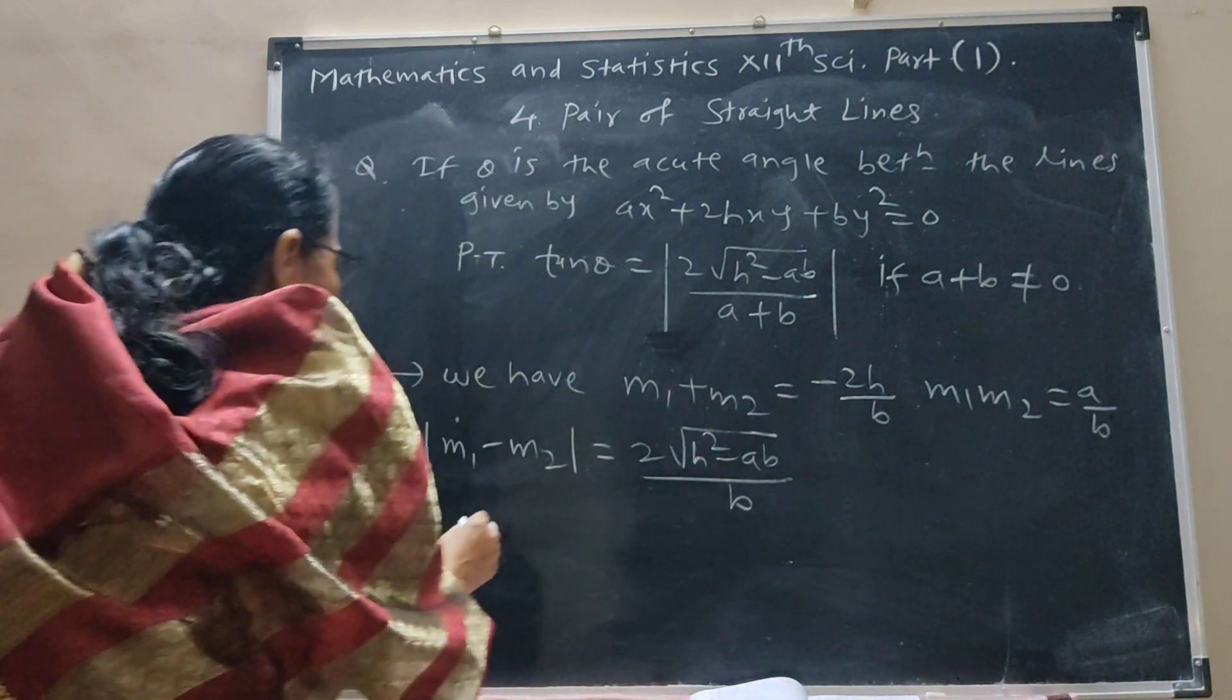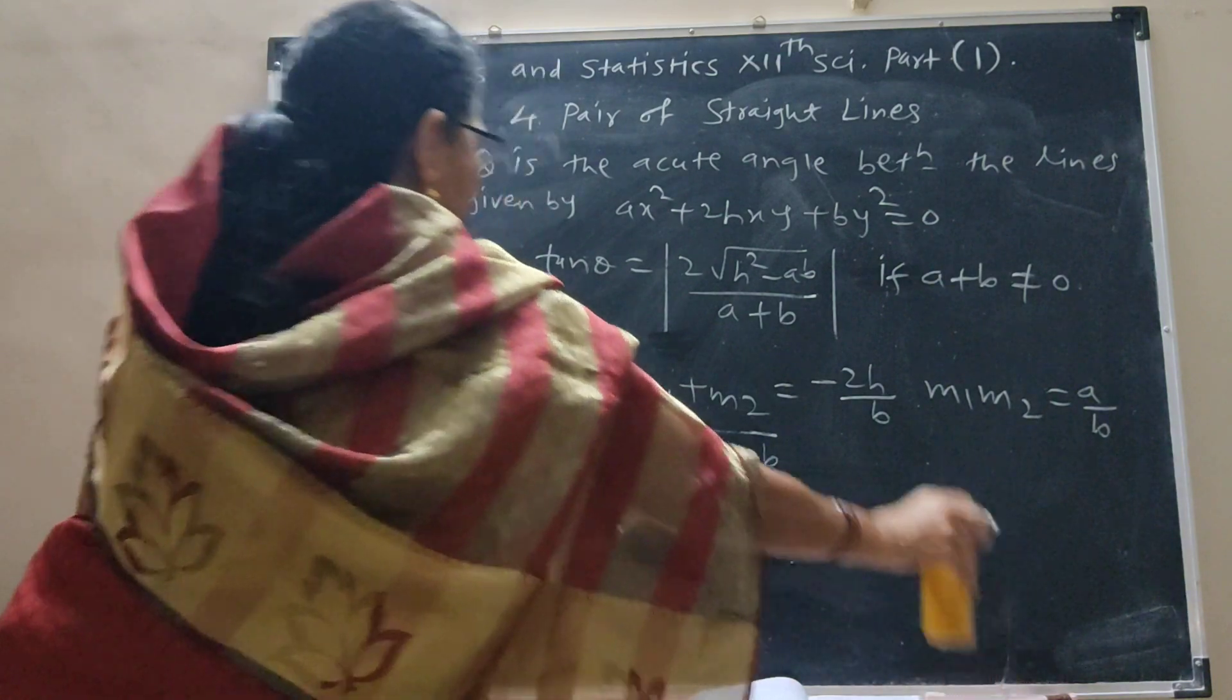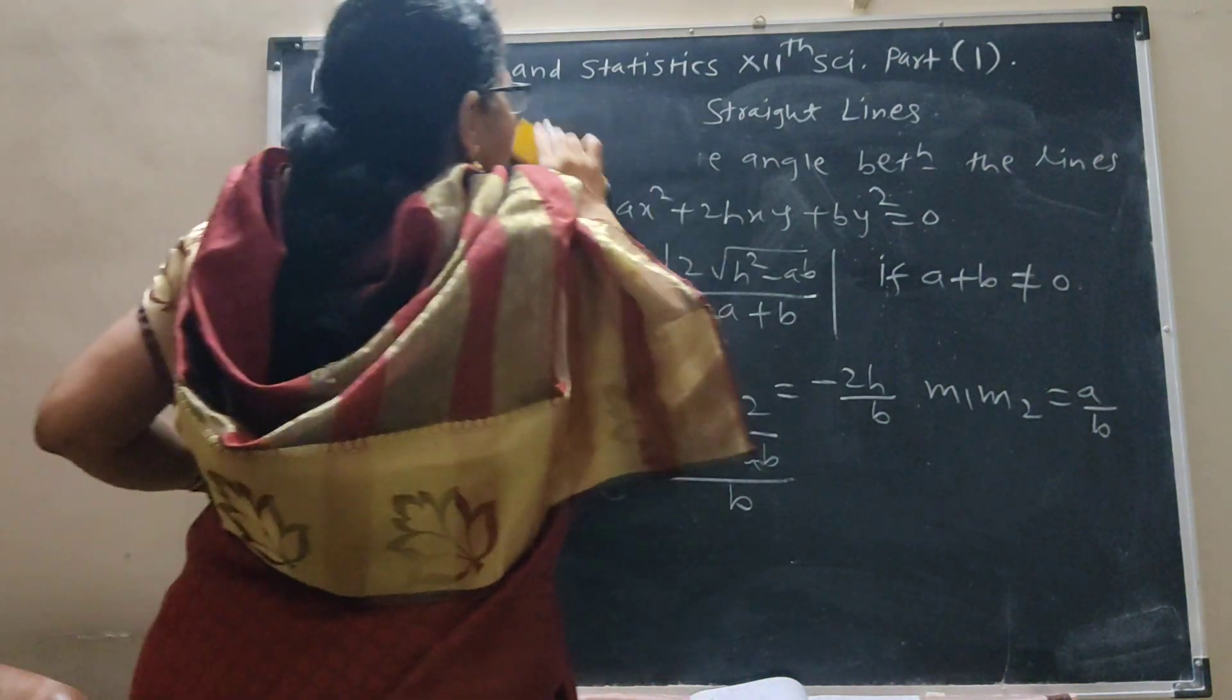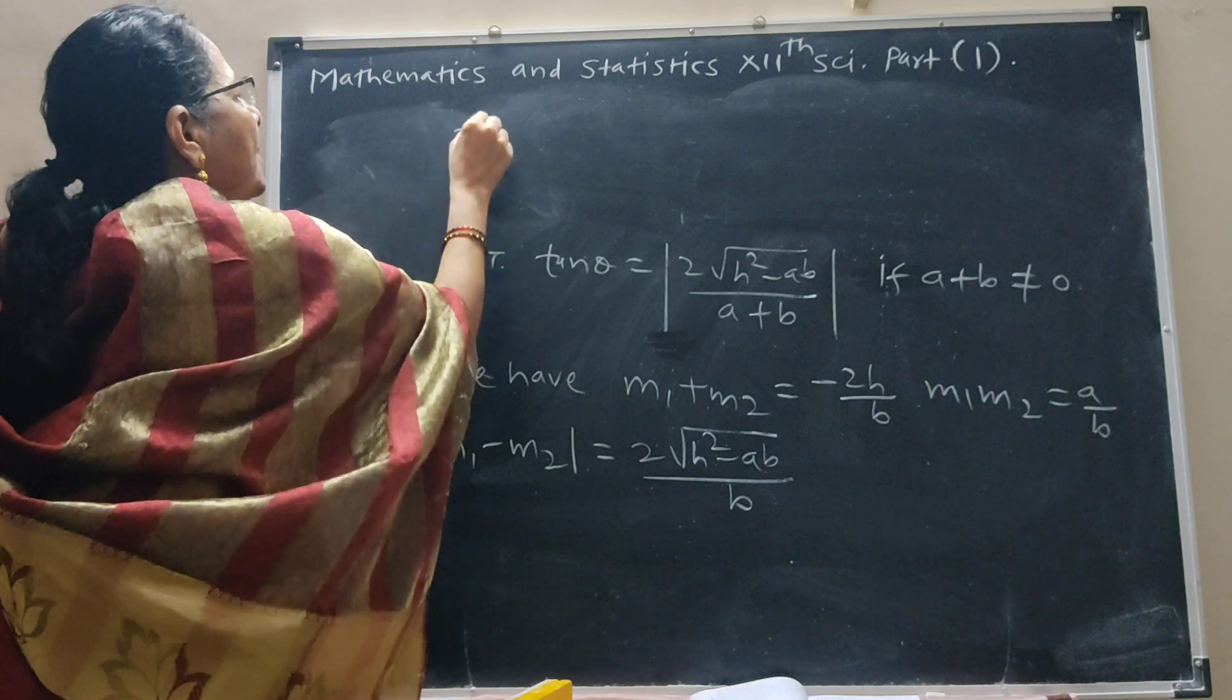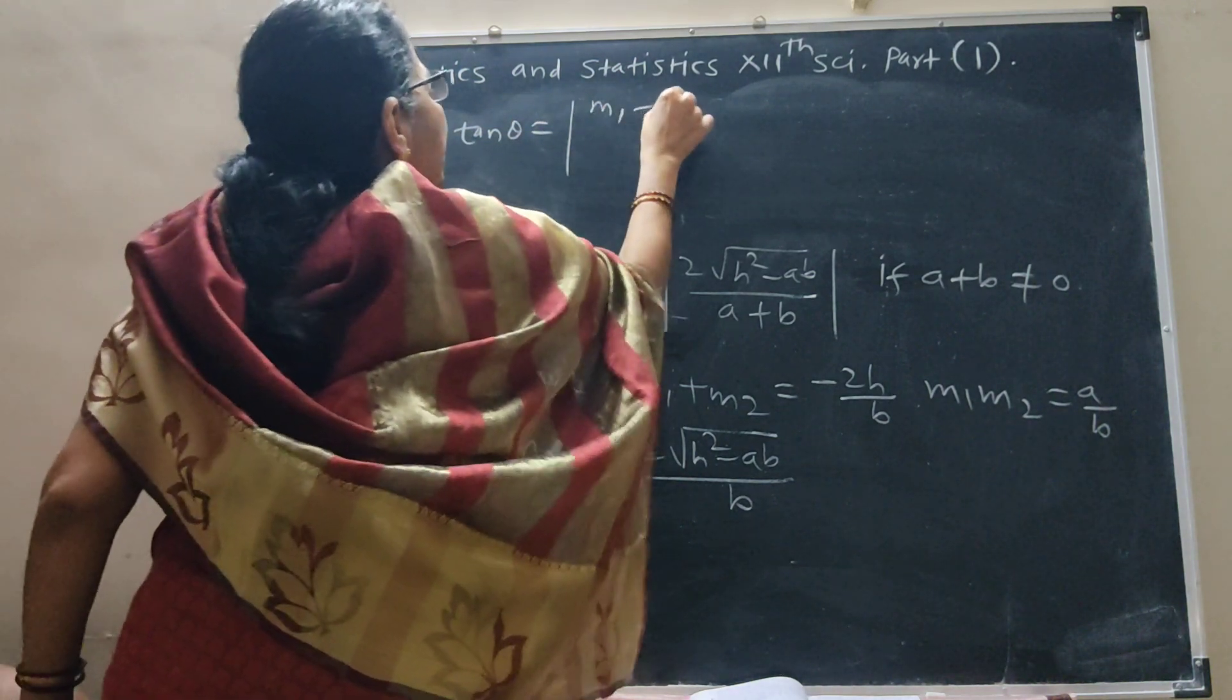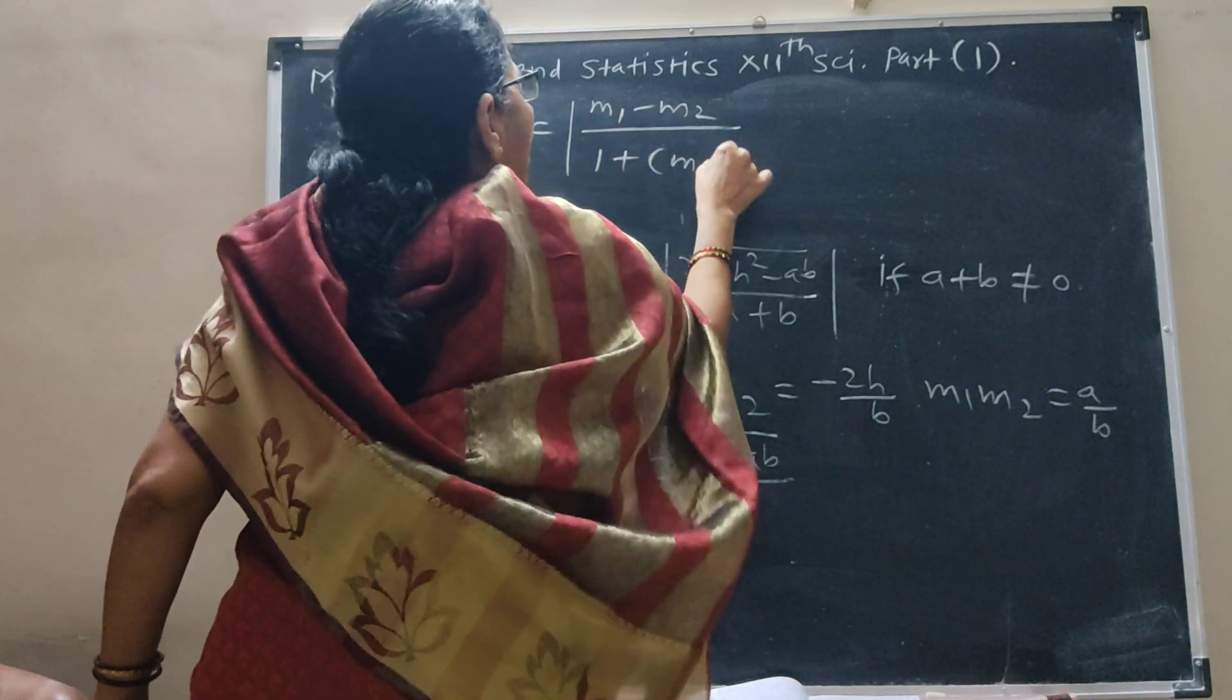Put all these values in the formula. Tan theta is equal to m1 minus m2 upon 1 plus m1 m2.